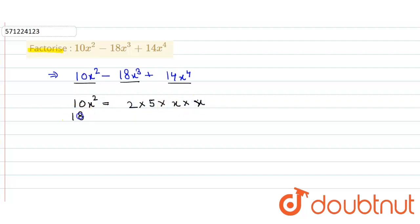Similarly, 18x³ equals 3 × 3 × 2 × x × x × x. And then 14x⁴ equals 7 × 2 × x × x × x × x.